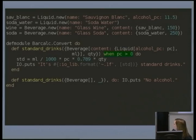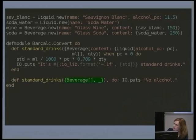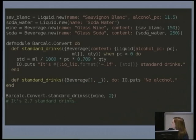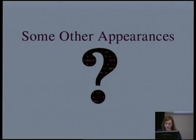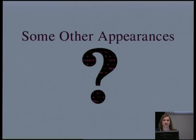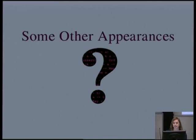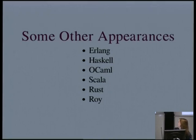The formula is: 0.789 — the specific gravity of ethanol — times mils, times percentage, divided by 100, times the quantity, with the output formatted to one decimal place using Erlang. The second implementation handles non-alcoholic drinks, returning zero. We can say I had two glasses of wine — that's 2.7 standard drinks — or five sodas — no alcohol. Where else have we seen pattern matching? Mathematica, Prolog with unification, and also Erlang itself, Haskell, OCaml, Scala, Rust, and others — quite a few places, certainly not limited to Elixir.